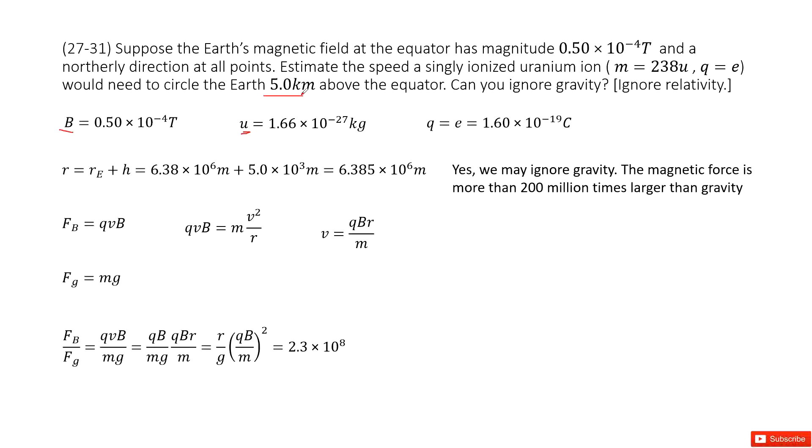So the radius for this circular motion is very obvious. That is the radius of the Earth plus the distance above the equator. So we can write it there. This is the given quantities.